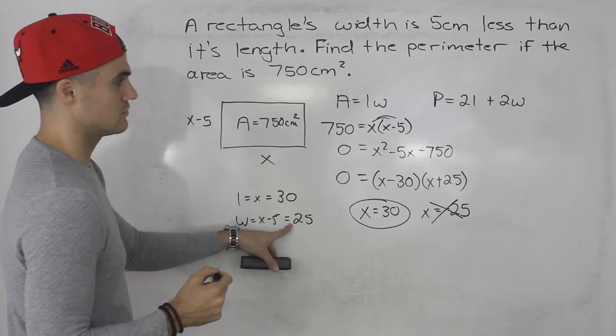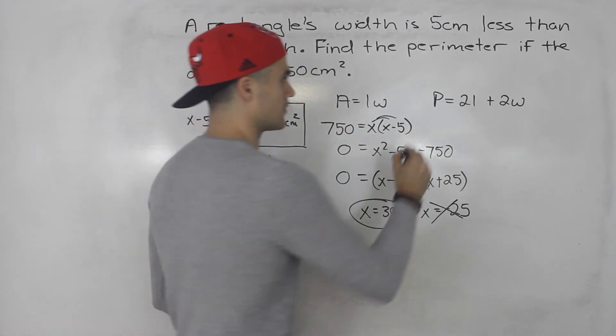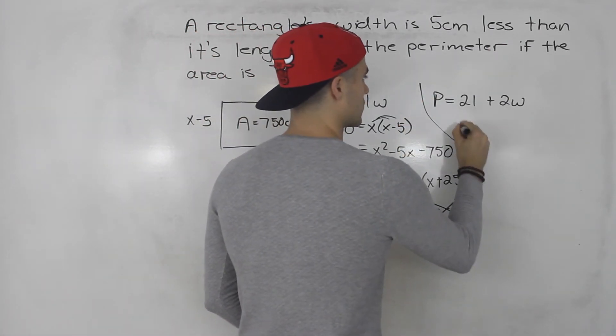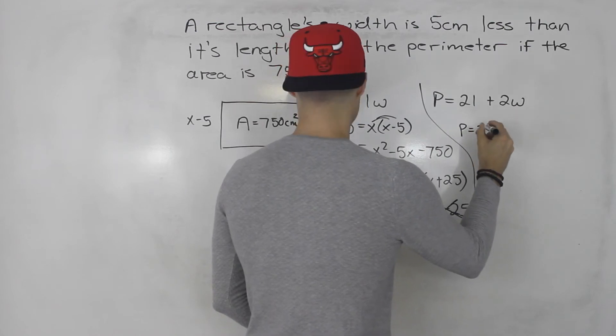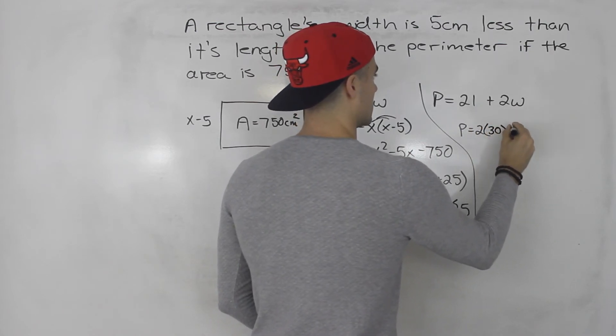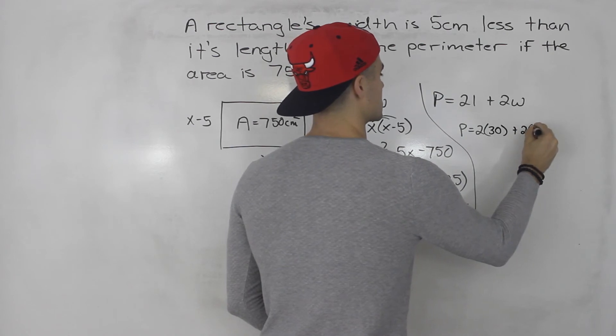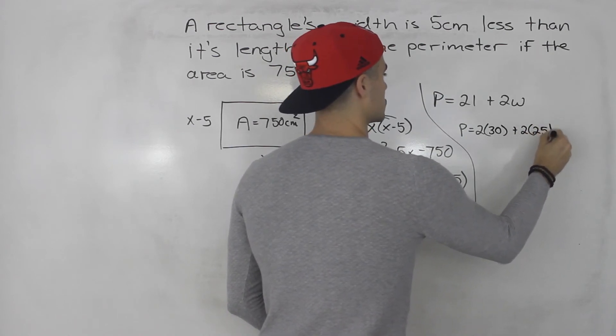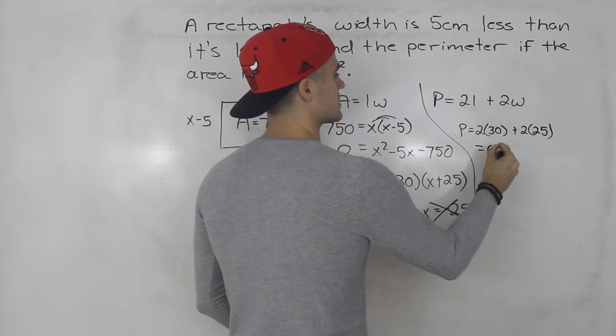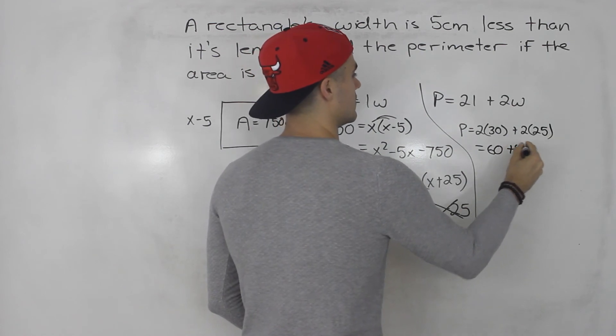So now you could just take these two values and plug them in for the perimeter. Perimeter is equal to 2 times 30 plus 2 times 25, so this would be 60 plus 50.